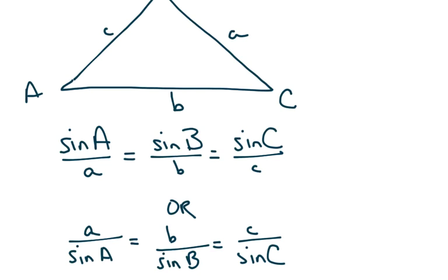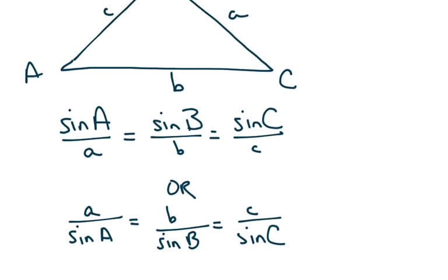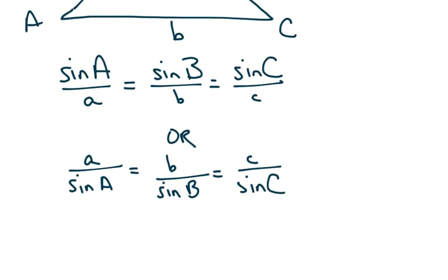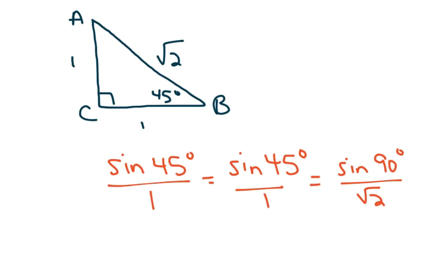The nice thing about proportions is that we can also flip them. So sometimes the law of sines is given as the flipped version — it's the same set of ratios, just all flipped. Whichever one seems to make more sense to you is the one you should probably use. To show you why the law of sines works, let's start with a triangle we already know.